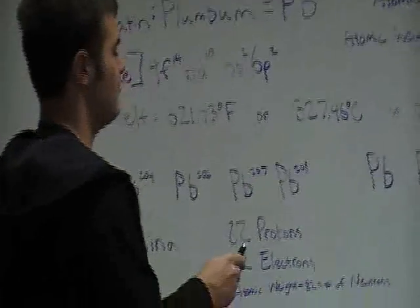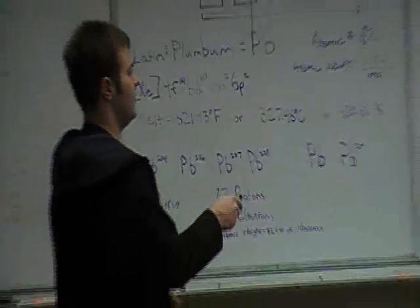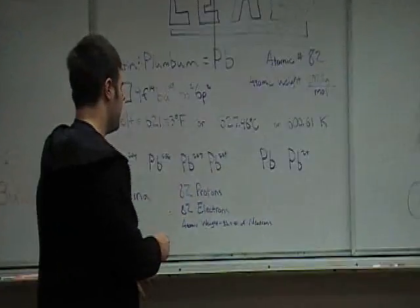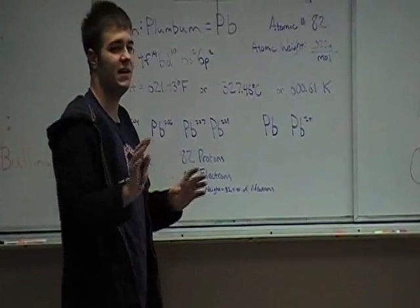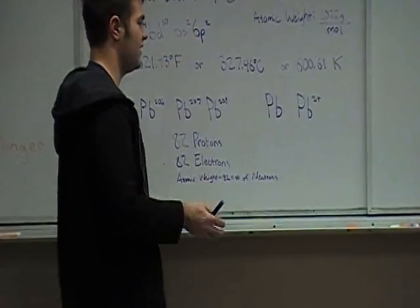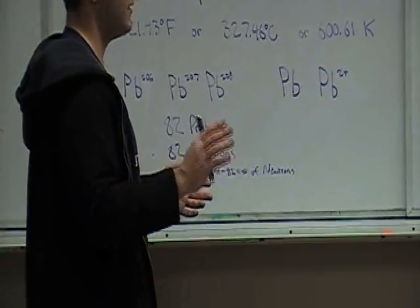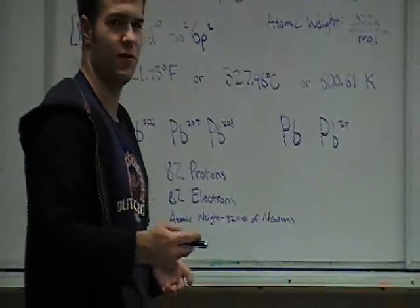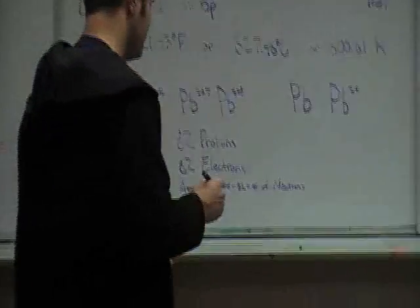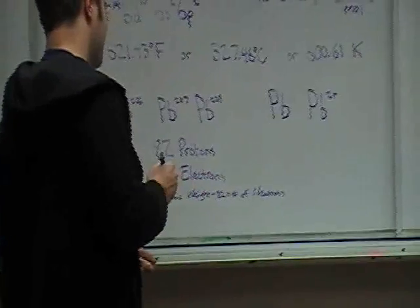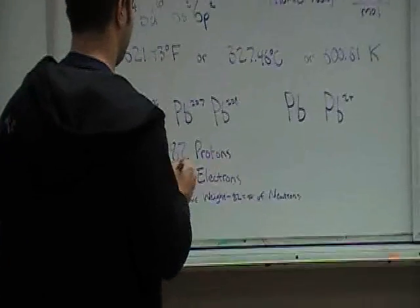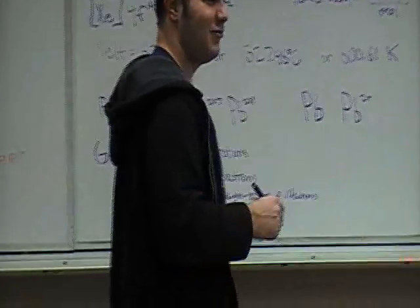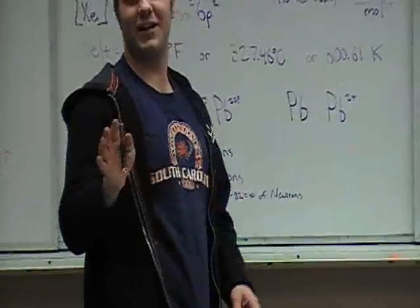The easy thing to remember is there are 82 protons in lead, just like the atomic number. And for every proton you have, you have to have one electron — that's if we're not in a different isotope. Isotope is the proper term. Stop putting lead in his coffee! The first time it was an accident.